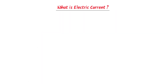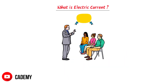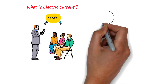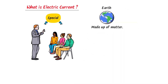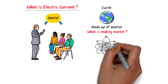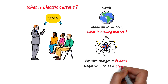What is electric current? In this lecture, you will learn something very special which will blow your mind. We know that the universe is made up of matter. What is making the matter? Every matter is made up of billions of atoms. We know that atoms contain positive charges like protons and atoms contain negative charges like electrons.